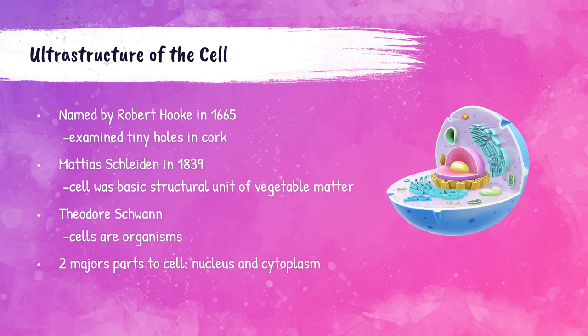We know today that cells are divided into two major parts: the nucleus and the cytoplasm. The structure shown here is a cartoon of a cell — in the middle is the nucleus, and surrounding that is the cytoplasm.